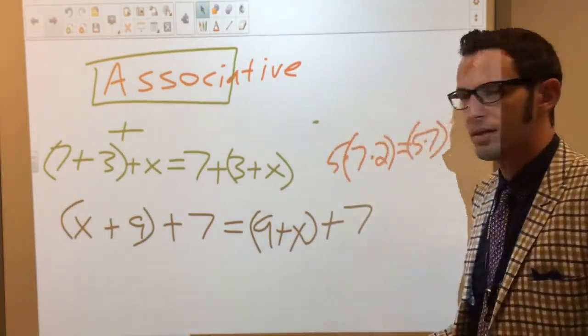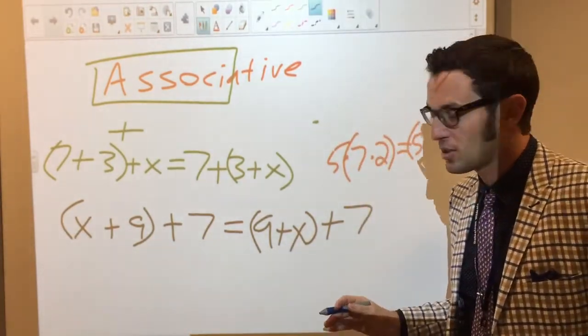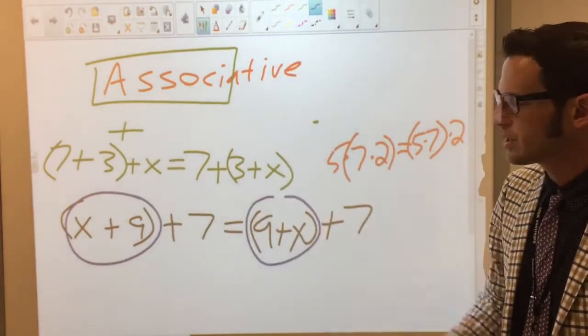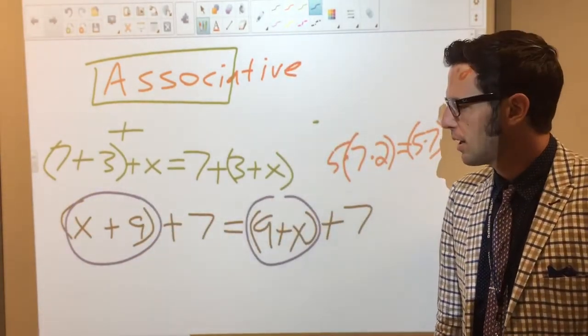So this is really, pause for a second in case you want to yell it out, this is really the commutative property at work here, because the order has flipped around. Okay?